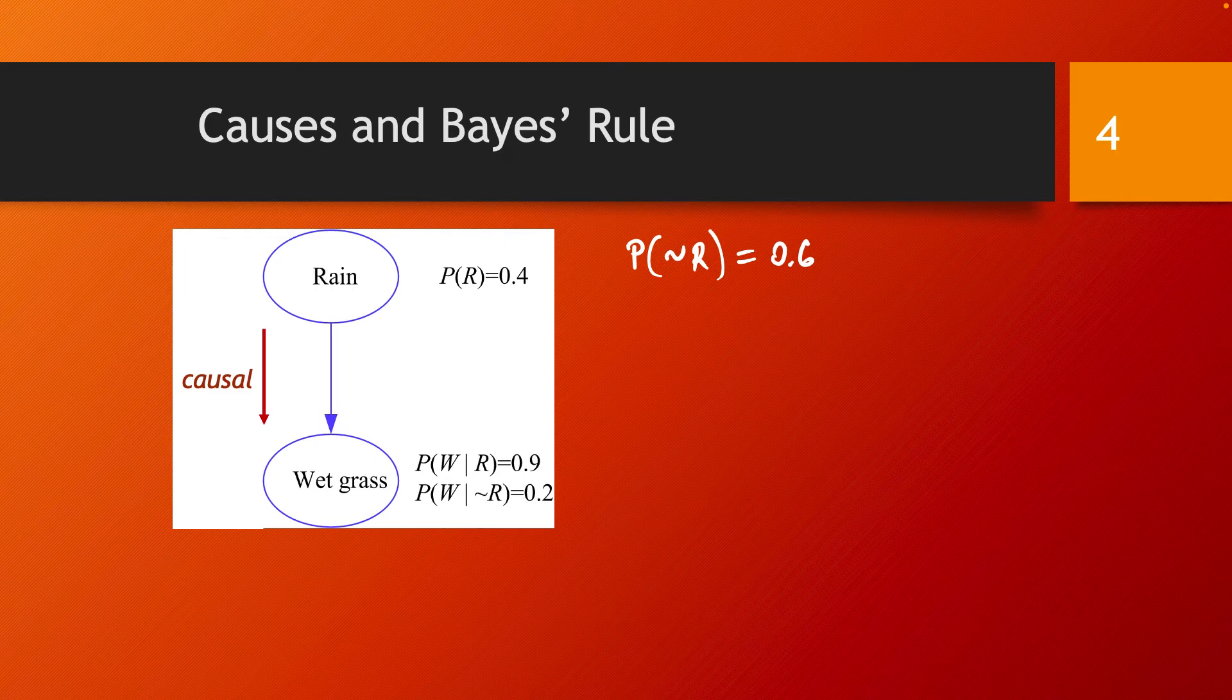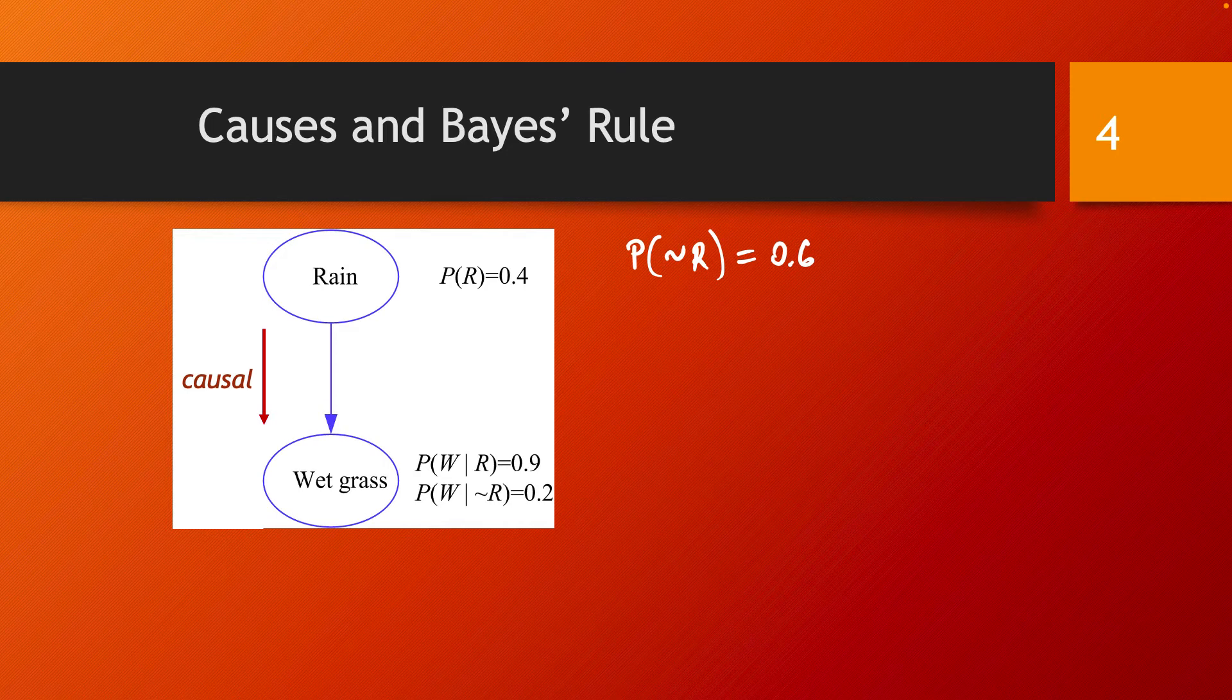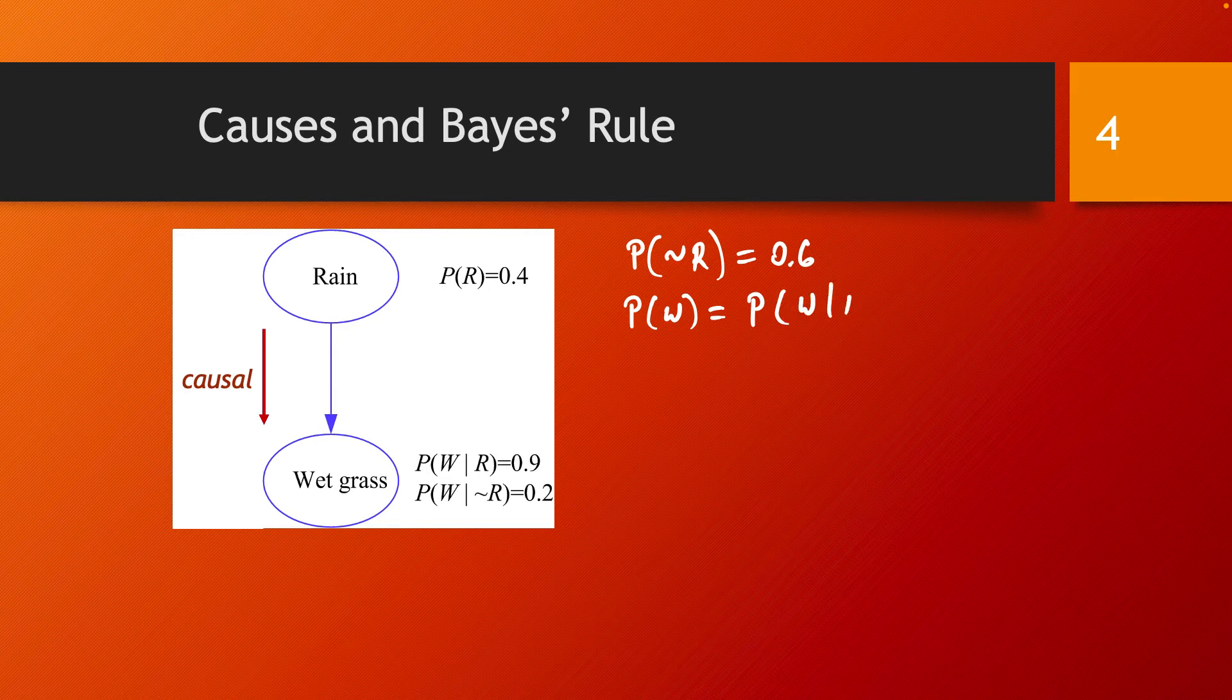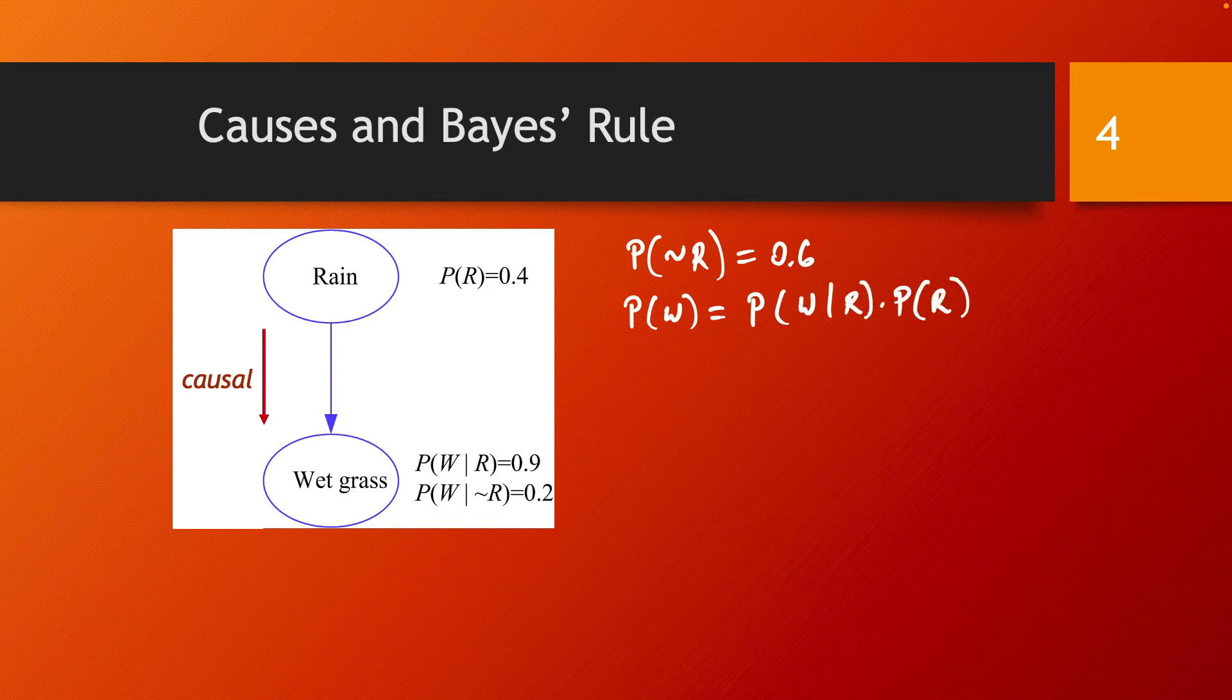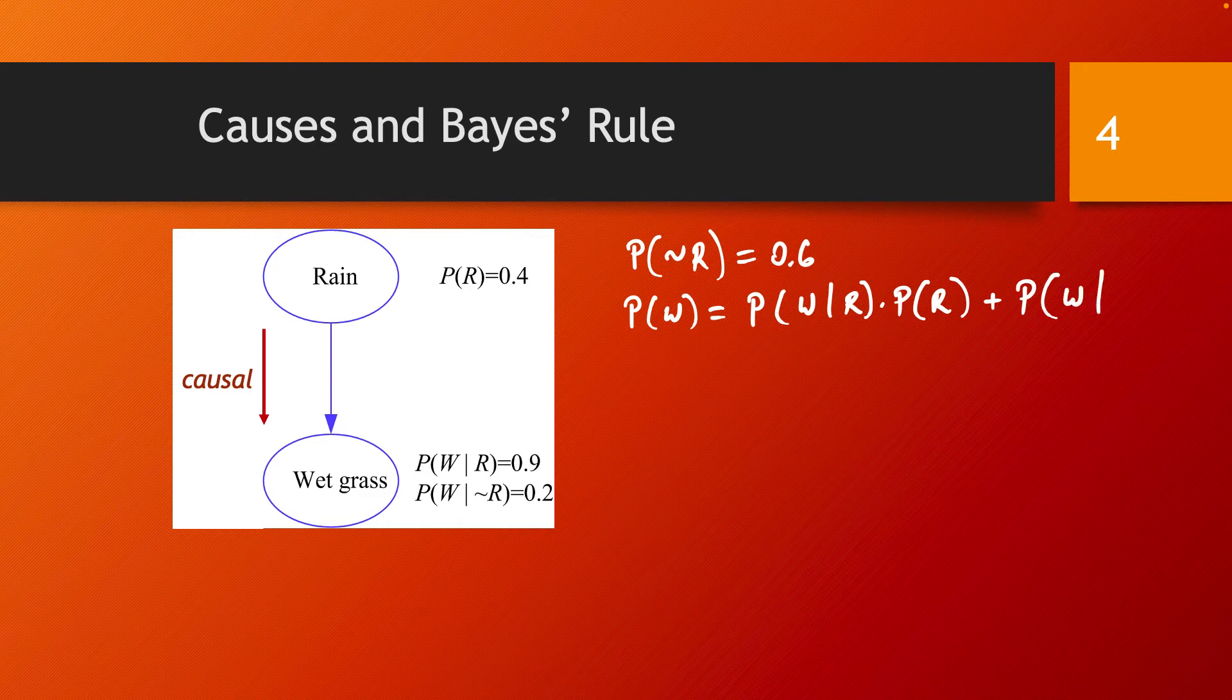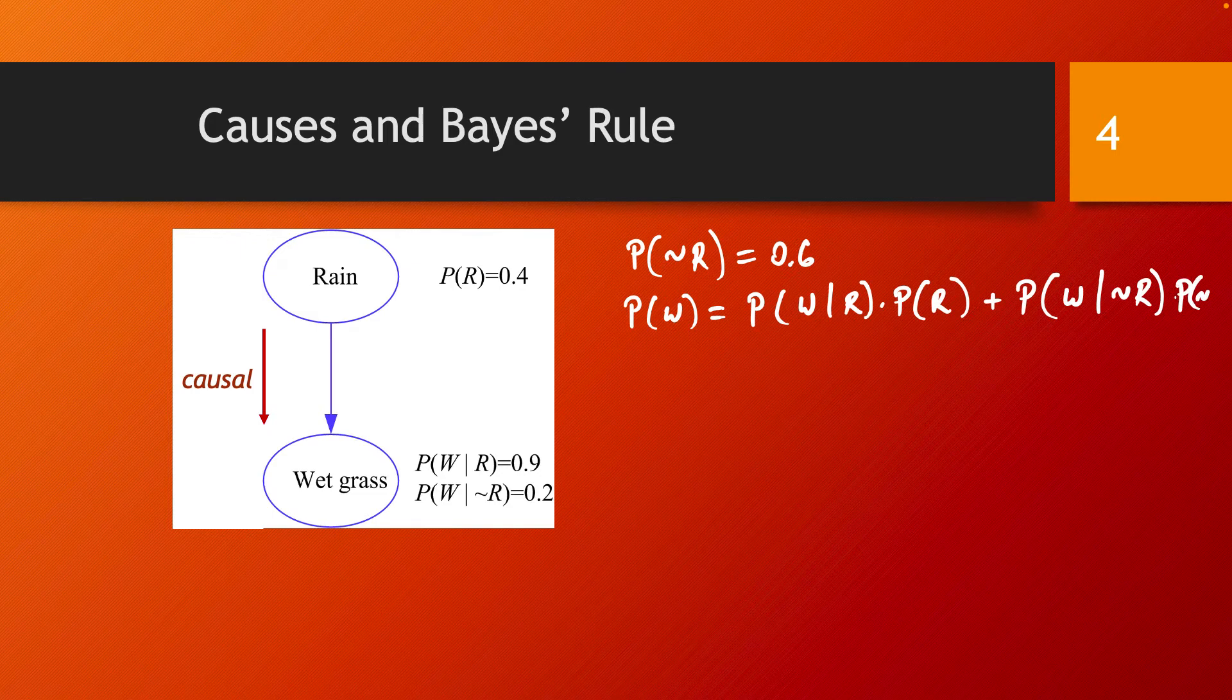And we also get the probability of the grass being wet. That's written as the probability of the grass getting wet on a rainy day, written through this conditional probability times the probability of a rainy day, plus the probability of the grass getting wet on a non-rainy day times the probability of a non-rainy day.